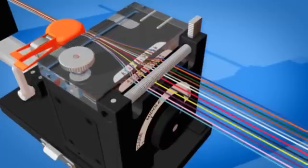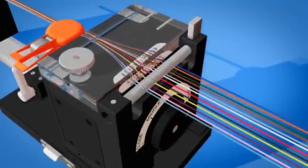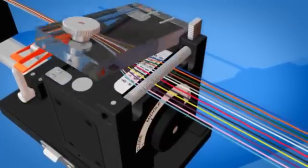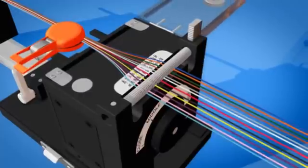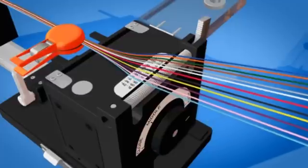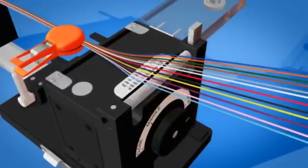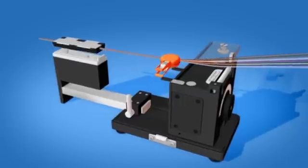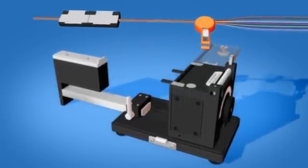Rotate the handle clockwise to open the arrangement arms. Open the arrangement cover. Push the spring release lever and remove the fibers from the spring gently. Remove the fiber holder from the FAT-02.